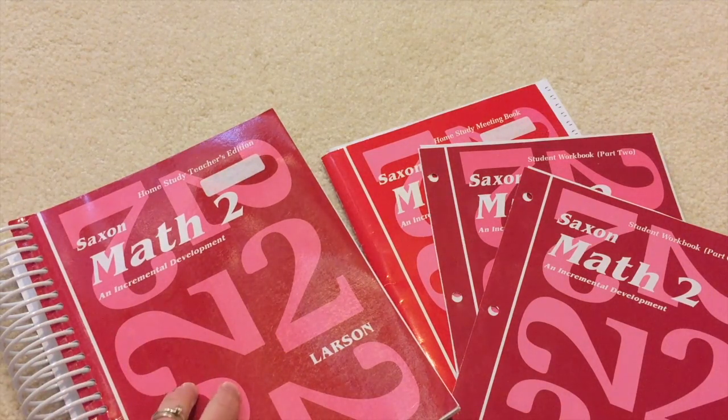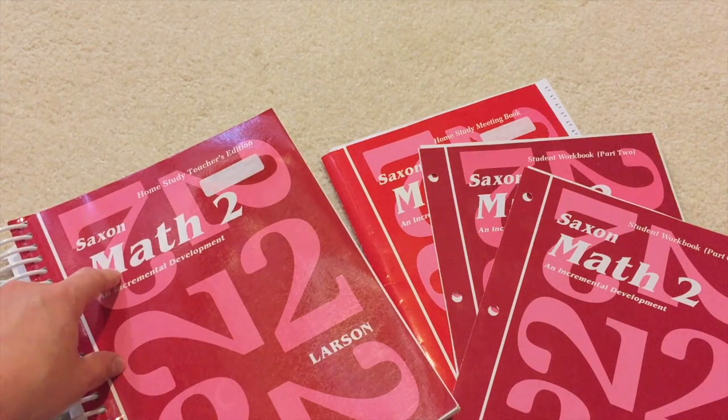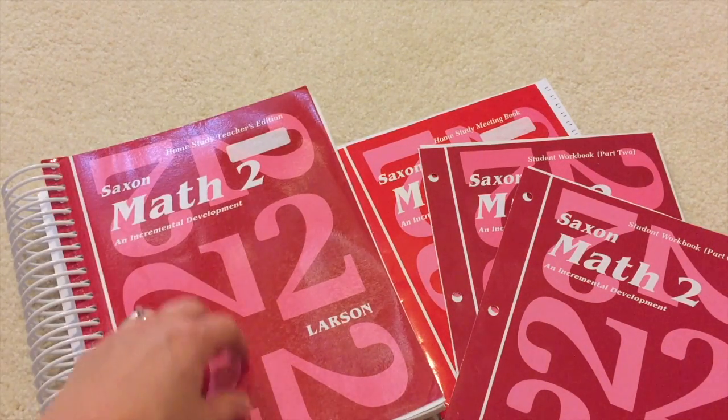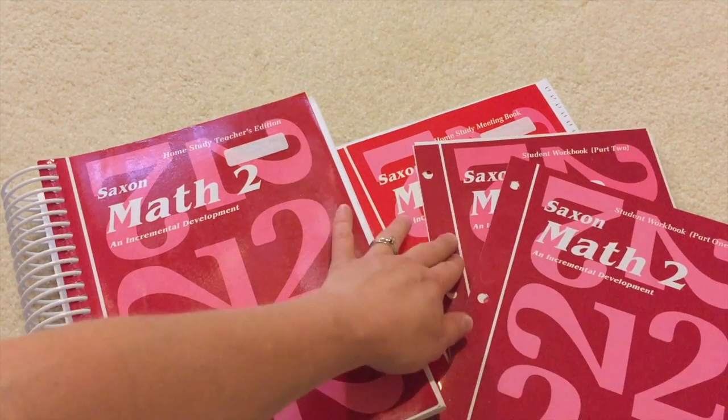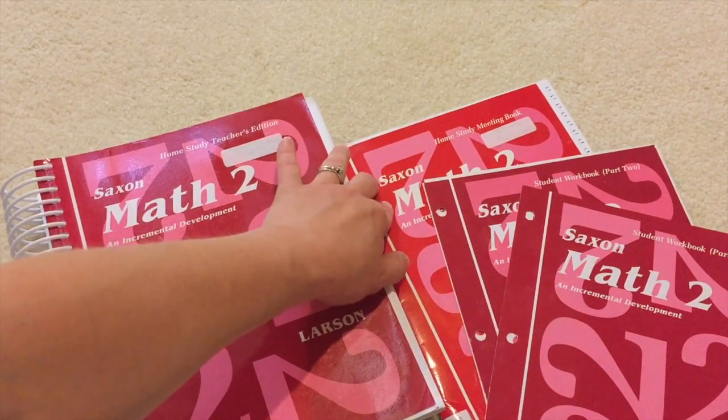So our close-up of our math curriculum this year, we have Saxon Math Level 2, and I've got the Teacher's Edition, I've got my Student Workbooks Part 1 and 2, and then I've got the Home Study Meeting Book.